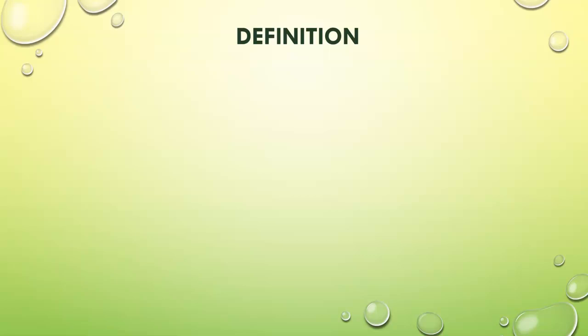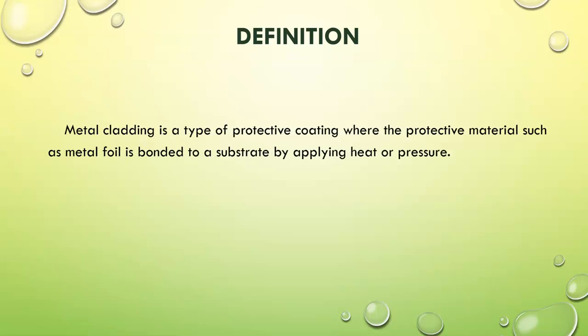Let us begin with the definition. To clad means to cover. When one metallic surface is covered with another, it is cladding. But technically, it can be defined as a type of protective coating where the protective material such as metal foil is bonded to a substrate by applying heat or pressure.